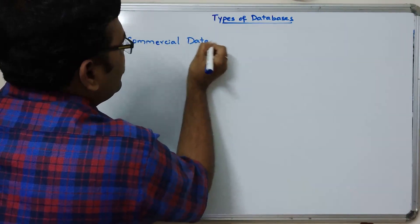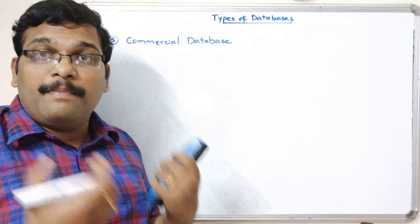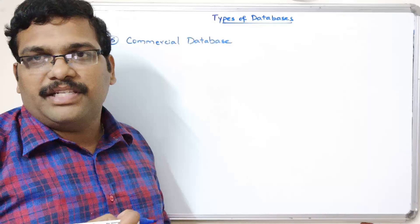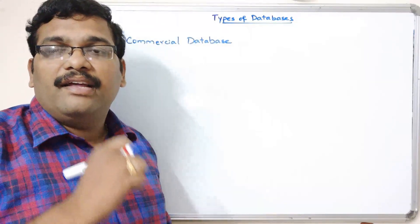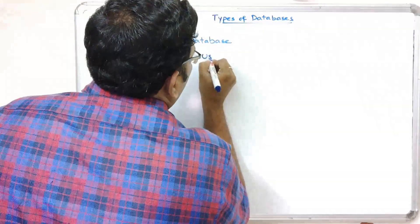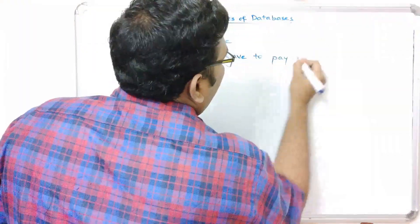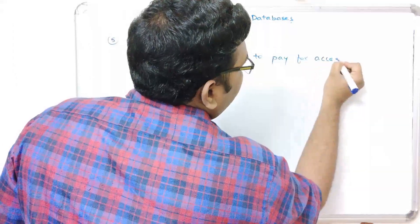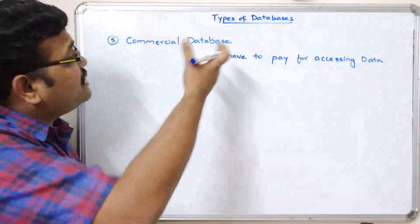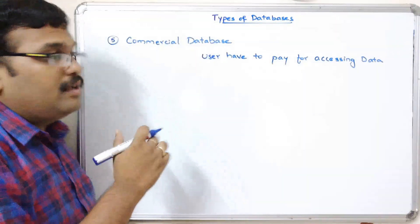The next type is the commercial database. The name itself indicates that to use this type of database, the user has to pay an amount. The user has to pay for accessing the data from the database — that is why it is called a commercial database, purely commercial.